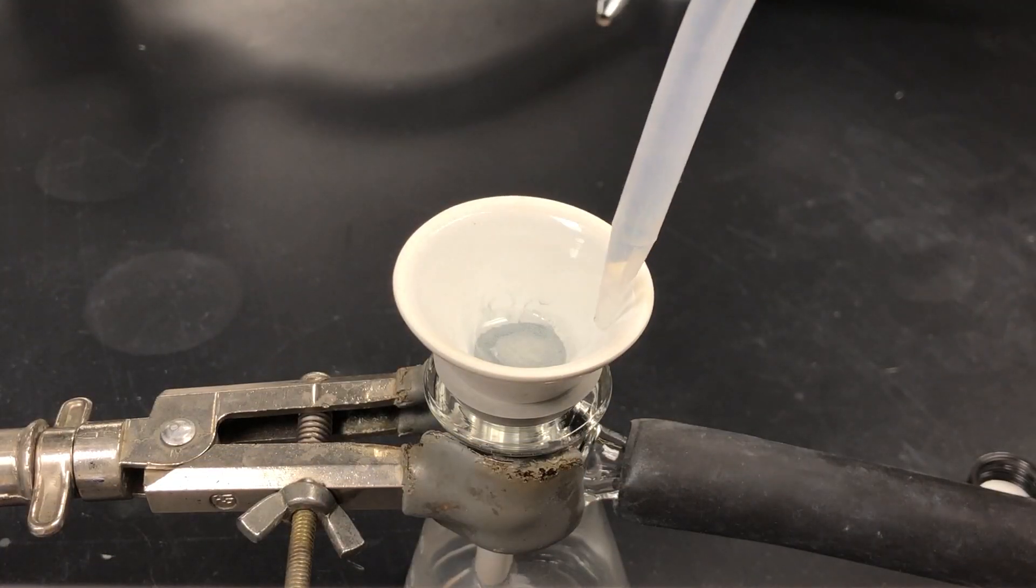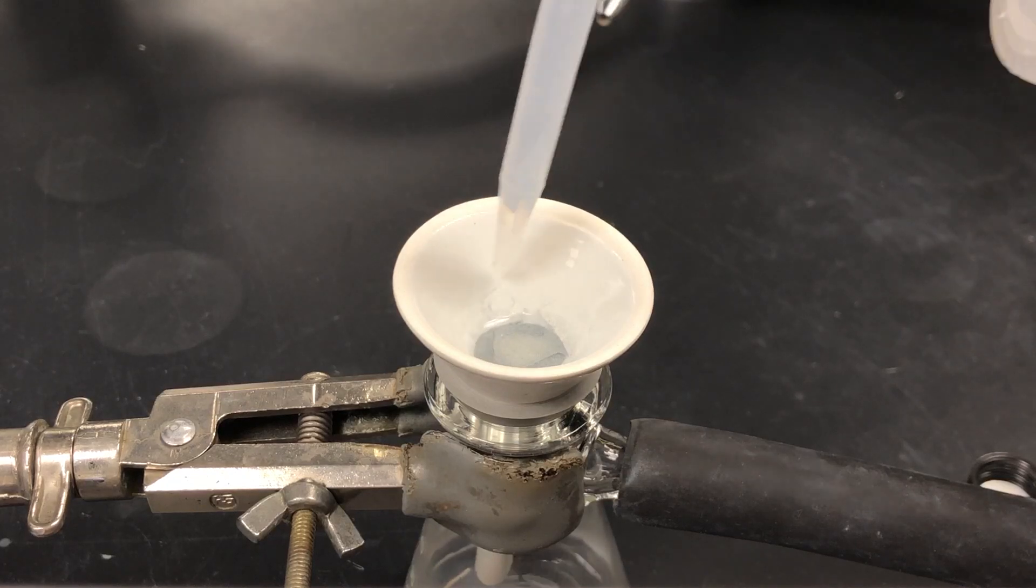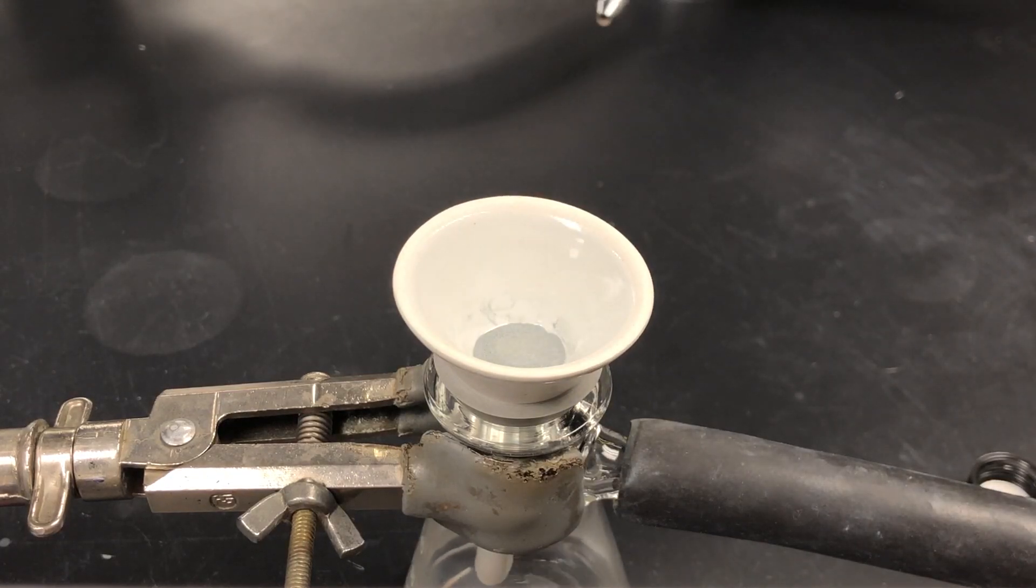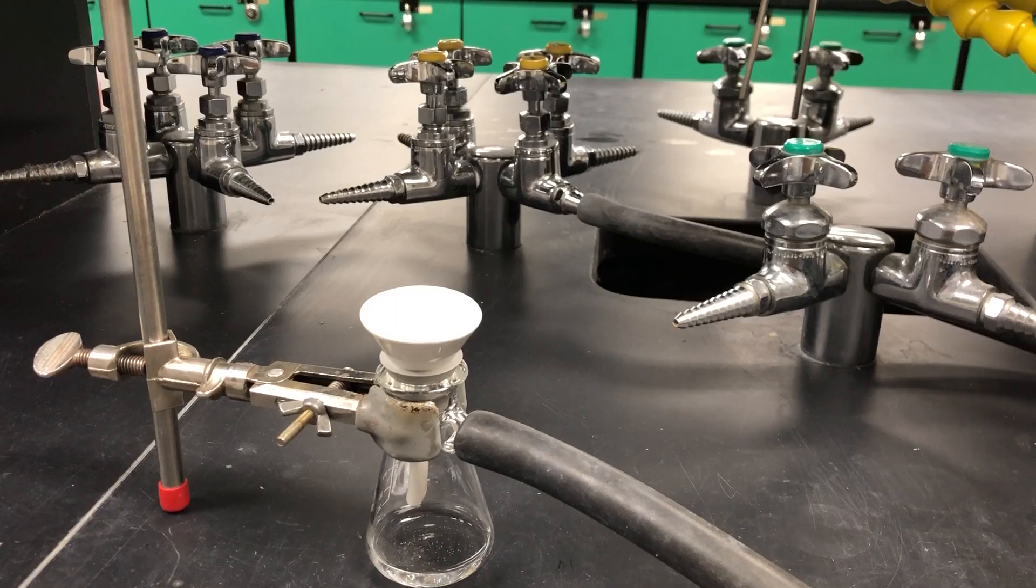You may also need to rinse the Hirsch funnel itself with multiple solvents, depending on what you are using in your experiment. Leave the vacuum filtration system running for a few minutes until your precipitate is dry.